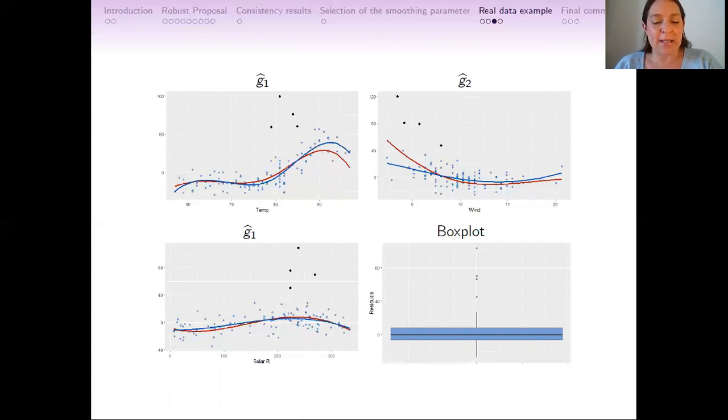In order to explore the presence of potential outliers, we plot the box plot of the residuals obtained with the robust fit. And as you can see, four observations were detected as outliers. In black points, we can see the partial residuals corresponding to these four observations. To study the influence of these observations on the classical fit, we recompute the classical estimation without these four observations, and we obtained the following results.